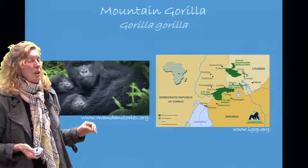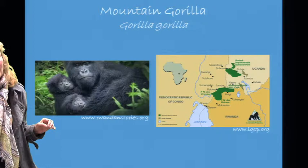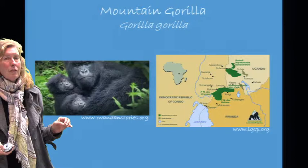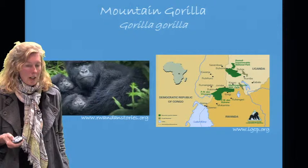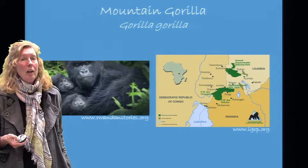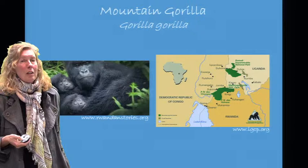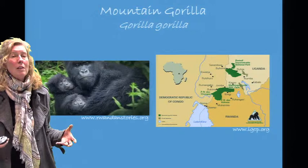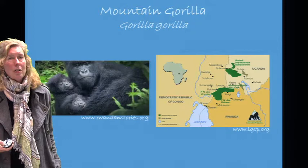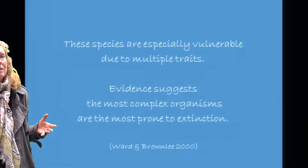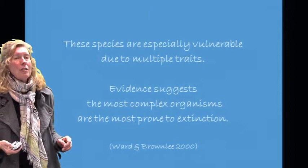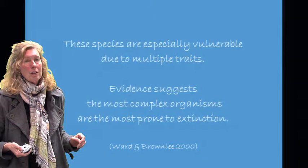The mountain gorilla occurs at the confluence of Uganda, Rwanda, and the Congo. These countries have been rather unstable with much civil war, and the mountain gorilla has literally been caught in the crossfire — an example of a range-restricted species that faces difficulty moving even if habitat were available. These species are especially vulnerable due to multiple overlapping traits. Evidence also suggests that the most complex organisms tend to be the most prone to extinction.